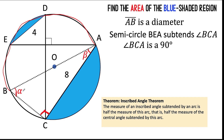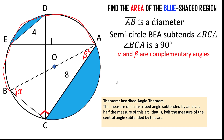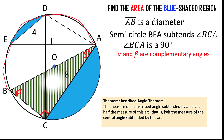In other words, alpha and beta are complementary angles. Next, let's connect point D to point A and look at this triangle. Notice that angle ABC is an inscribed angle subtended by arc AC.